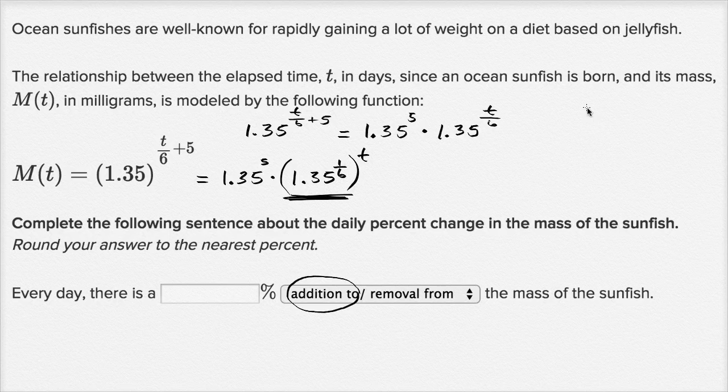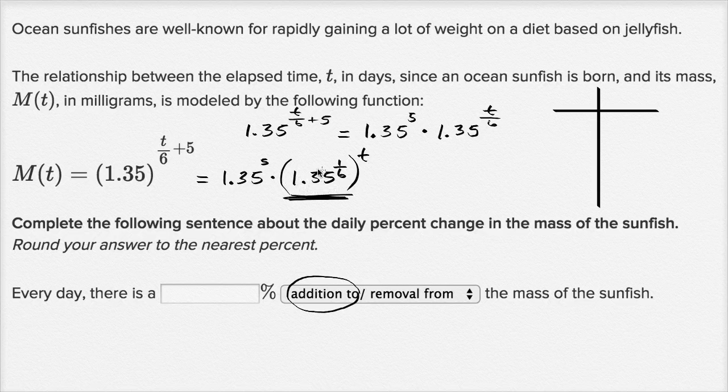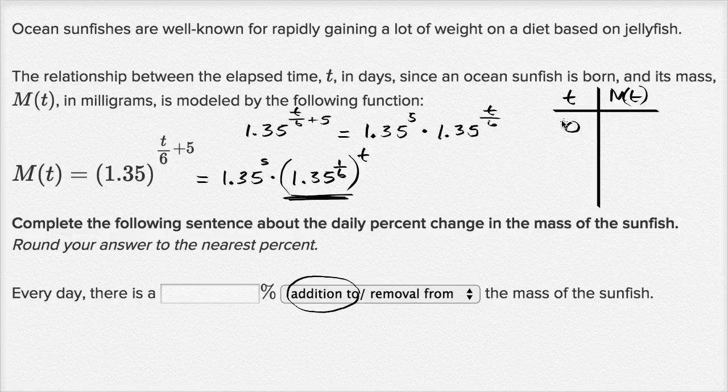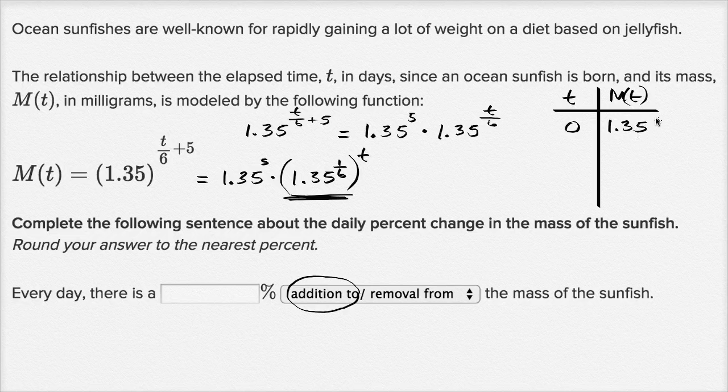Let me draw a little table here to make that really clear. All of that algebraic manipulation I just did is so I could simplify this so I have some common ratio to the tth power. So t and M(t). Based on how I've just written it, when t is zero, this is one, so then our initial mass is going to be 1.35 to the fifth power.